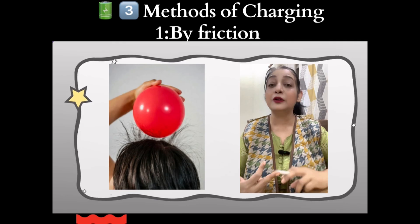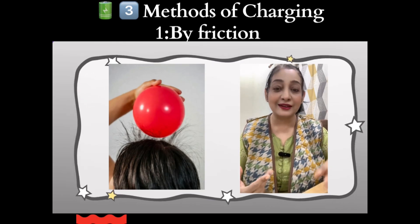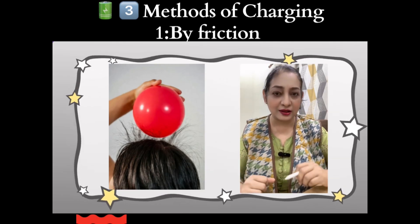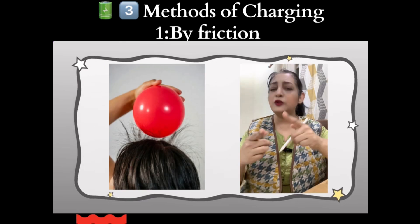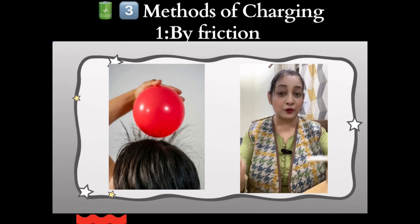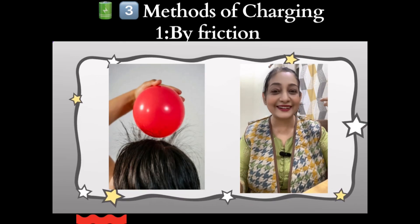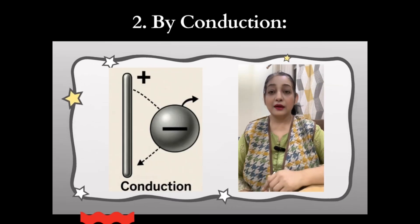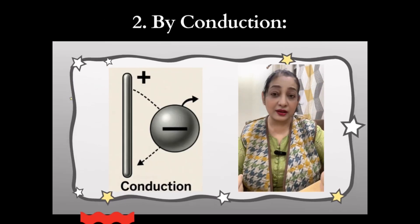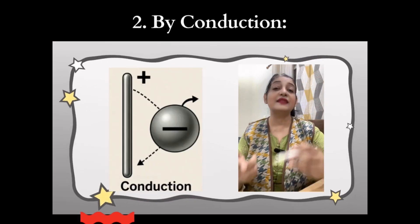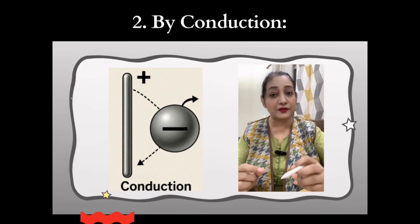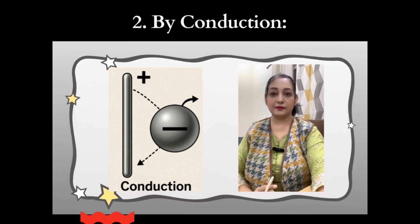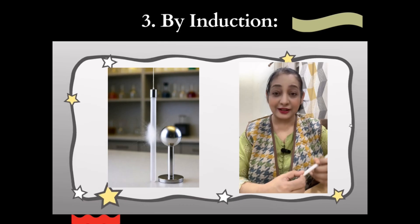Number one, by friction: rubbing two objects transfers electrons, for example balloons and hair. Number two, by conduction: a charged object touches another, electrons transferred directly. Number three, by induction: a charged object brought near another causes temporary charge separation without contact.